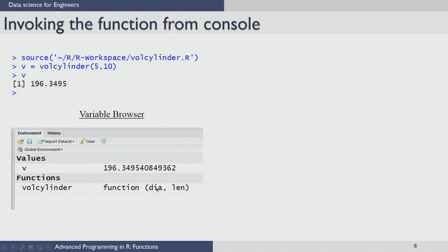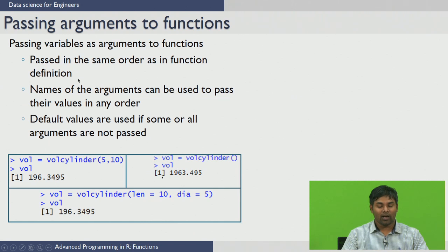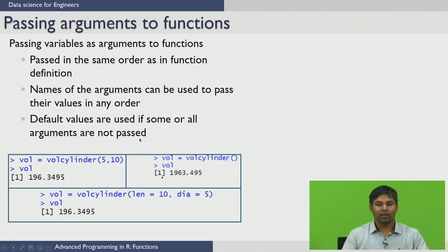You can also see the value of the volume and that the function 'volume_cylinder' is available with two arguments, dia and length. There are several ways to pass arguments to a function. Generally in R, arguments are passed to the function in the same order as in the function definition. If you do not want to follow any order, you can pass the arguments using their names in any order. If arguments are not passed, the default values are used to execute the function.